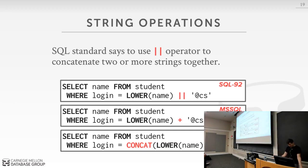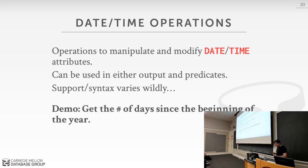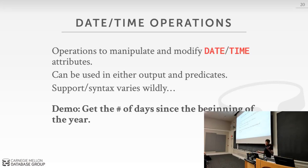Date and time handling is where things get really inconsistent. A date records a timestamp without time; a timestamp includes time. They vary in granularity — sometimes seconds, sometimes milliseconds or finer. The syntax for manipulating and extracting information from dates varies wildly across systems. Let's look at a seemingly simple operation: getting the number of days from today since the beginning of the year, and see how to do it across three different systems.